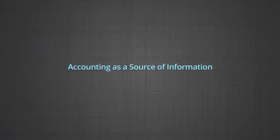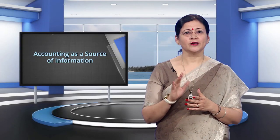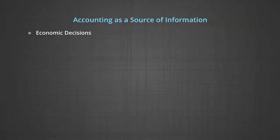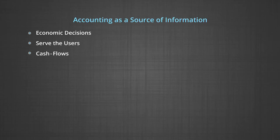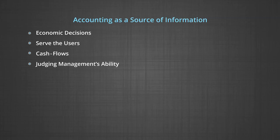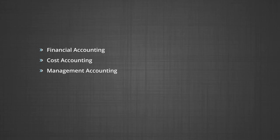Next, we will discuss about accounting as a source of information. To be useful, the accounting information should ensure: providing information for making economic decisions, serving the users who rely on financial statements as their principal source of information, providing information useful for predicting and evaluating the amount, timing and uncertainty of potential cash flows, providing information for judging management's ability to utilize resources effectively, providing factual information, and providing information on activities affecting society. To satisfy the various needs of internal and external users, this has resulted in the development of sub-disciplines within accounting — mainly financial accounting, cost accounting and management accounting.